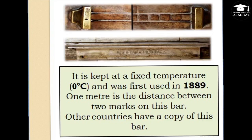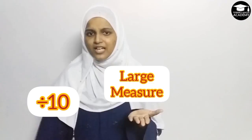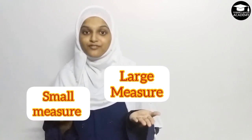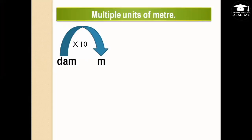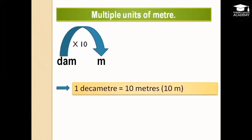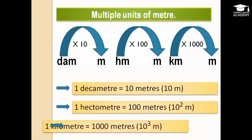The unit meter is too small for measuring some lengths and too large for others, so it was decided to increase it in multiples of 10 for large measures. Multiple units of meter: one decameter equals 10 meters, one hectometer equals 100 meters, one kilometer equals 1000 meters.